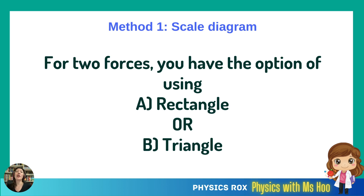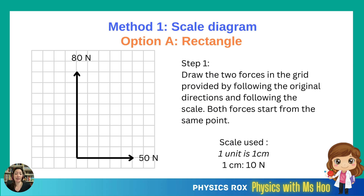If there are two forces in the question, you have the option of using the rectangle method or triangle method. Let's start first with the rectangle method. If you'd like to use the rectangle method, you would need to draw the two forces. Normally the question would provide you with a grid. If the question doesn't have grid paper, it would have a blank space instead, and you need to use your ruler to measure out the length to represent the force. Whether you're using the grid or drawing in a blank space, you would have to follow the scale. In this particular question, the scale used is 1 cm to 10 N. Let's assume that every one unit of the grid is 1 cm. So first, draw the two forces in the grid or the space provided by following the original directions of each force and following the scale when drawing this out.